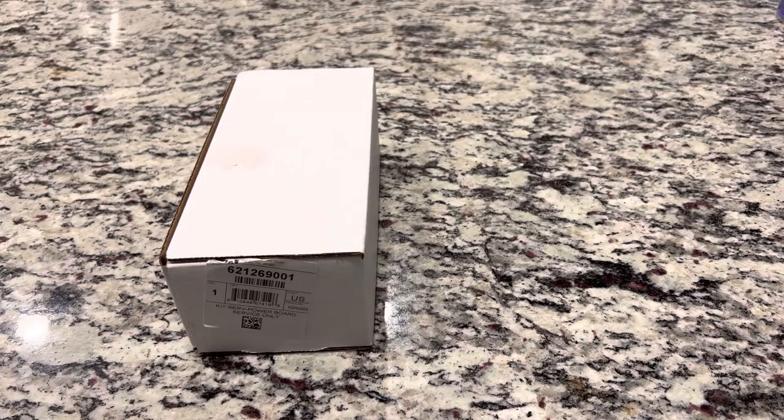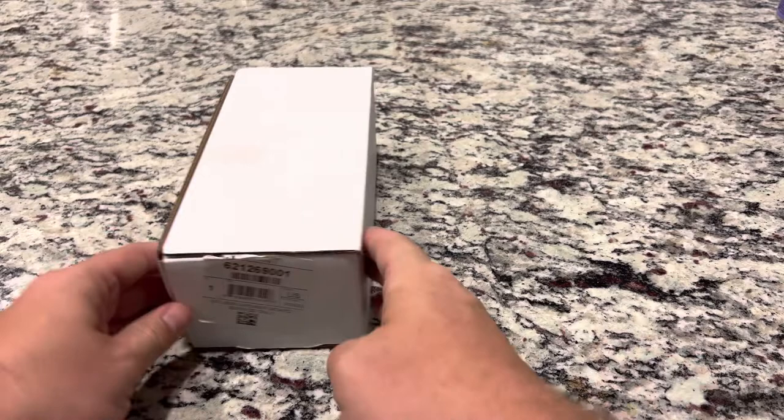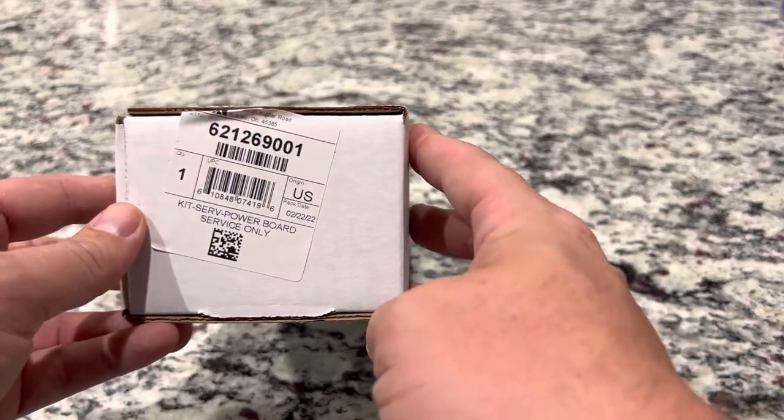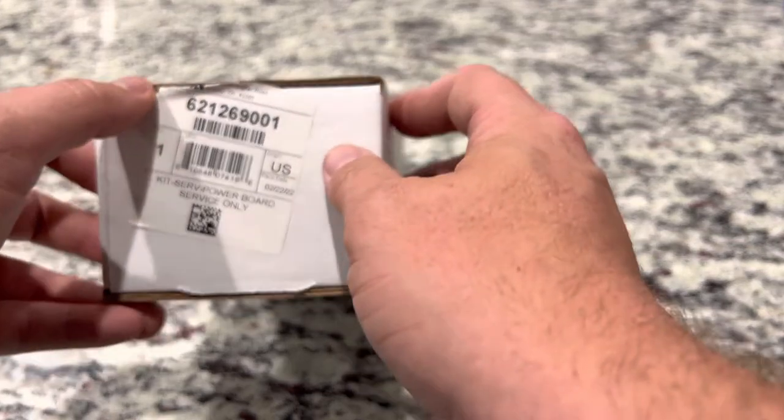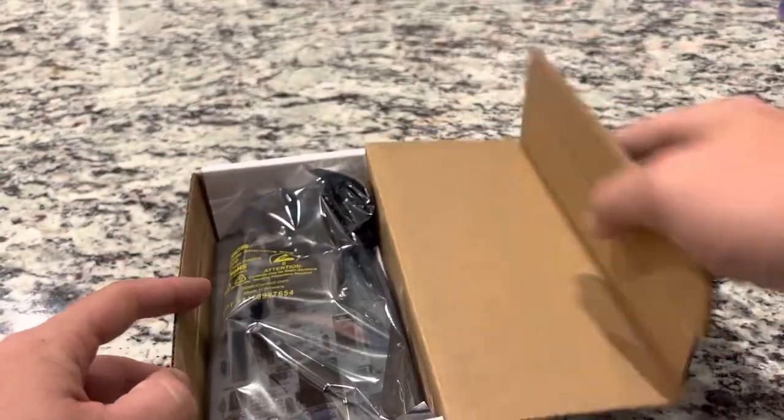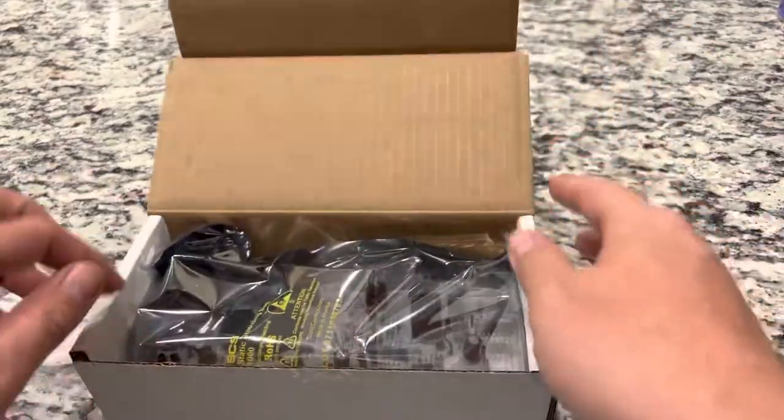Hey guys, Joey here with World of RV Parts. In this video we're talking about part number 621269001. It is a Norcold control board, the power board replacement. So open her up.